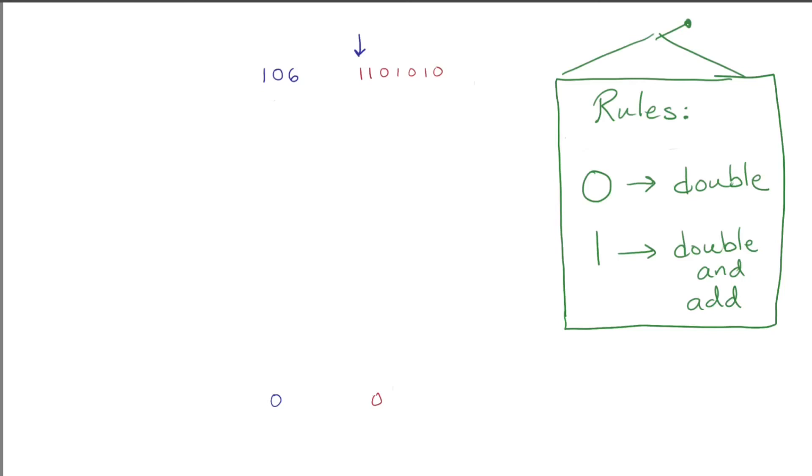The rules are, start with the number zero. If you see a digit zero, you double the number, and if you see a digit one, you double and add. First is a one, so we double. Doubling doesn't do anything. And add one. Then we see a one again, so we double and add.